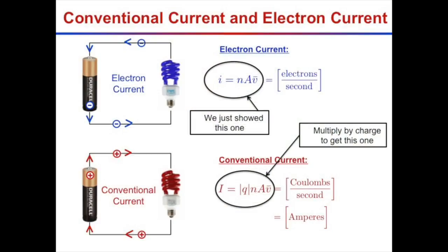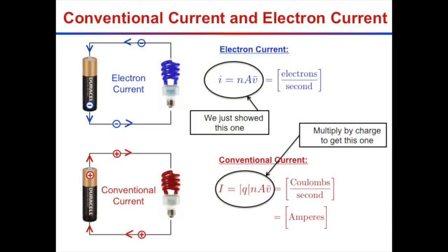So if we're talking in terms of electron current, little i equals little n times A times V, where n is the number of electrons per unit volume available to carry current. To get conventional current, take that number and multiply by the charge each particle carries: 1.6 times 10 to the minus 19 coulombs. That converts particles per second into coulombs per second.